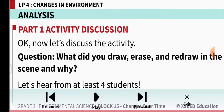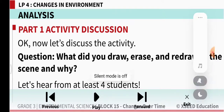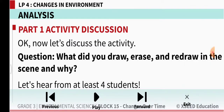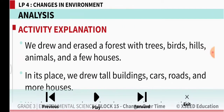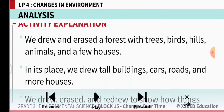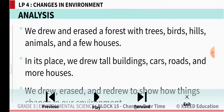What did you draw, erase and redraw in the scene, and why? First we drew a forest with trees, birds, hills, animals and a few houses. Then in its place we drew tall buildings, cars, roads and more houses.